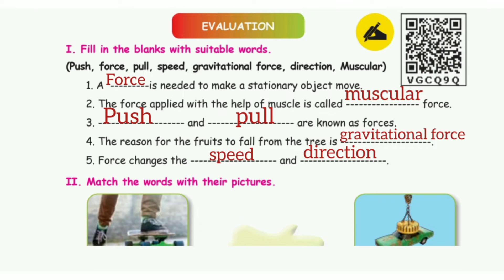Question 3: Blank and blank are known as forces. The answer is push and pull. Question 4: The reason for the fruits to fall from the tree is blank. The answer is gravitational force. Question 5: Force tends the blank and blank. The answer is speed and direction.